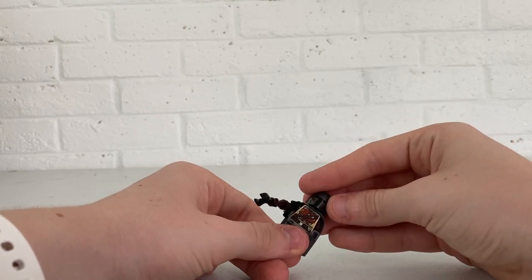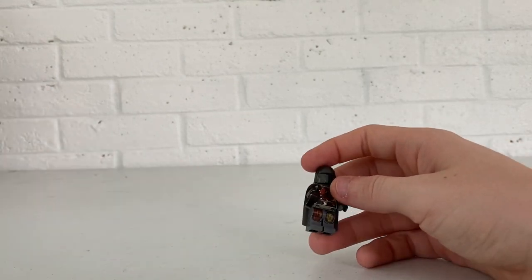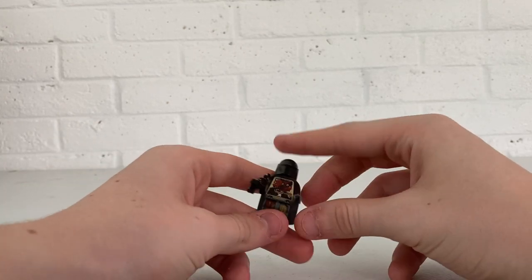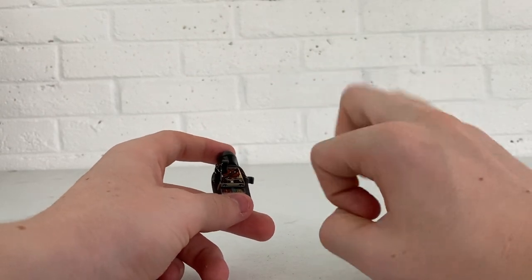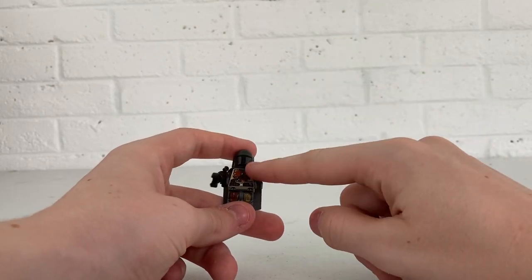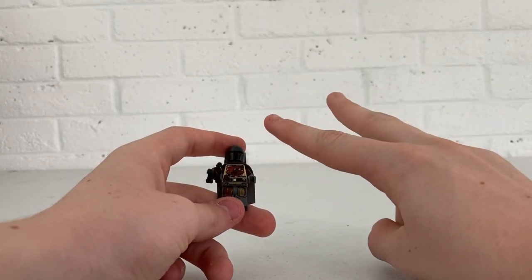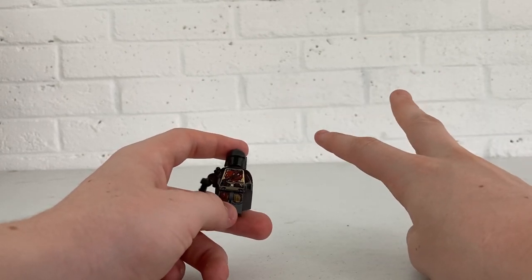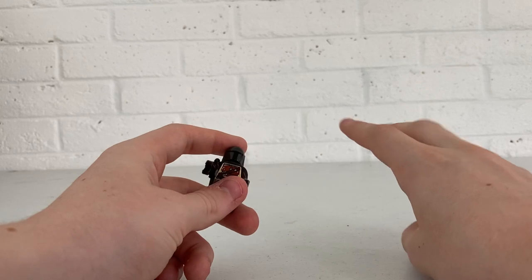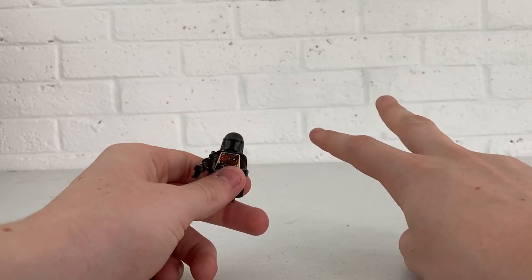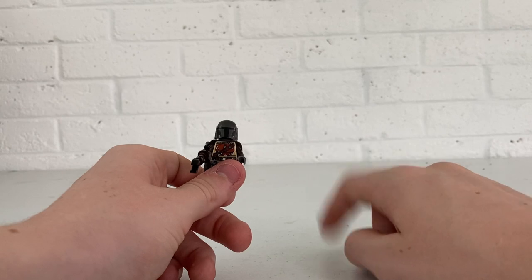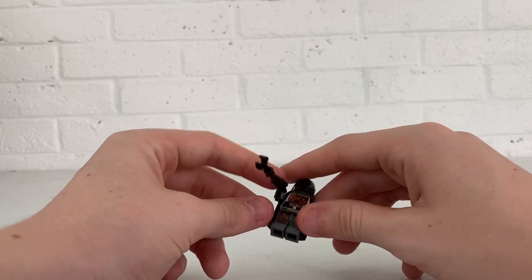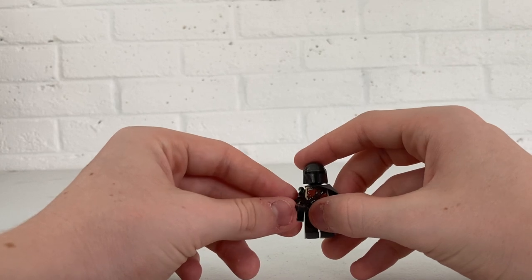LEGO hadn't given us the head yet. There's only three ways you could get this minifig: one in this set, two in the Razor Crest, or three in the UCS Razor Crest. Currently, the Razor Crest playset and the UCS Razor Crest are the only ways you can get this minifig because the AT-ST Raider retired at the end of last year.